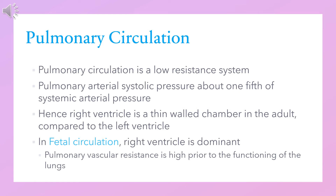In fetal circulation, the right ventricle is dominant. Pulmonary vascular resistance is high prior to the functioning of the lungs.